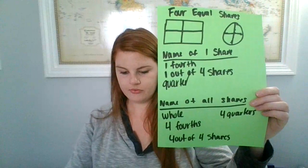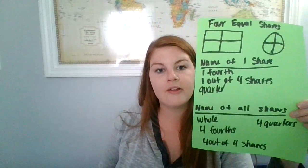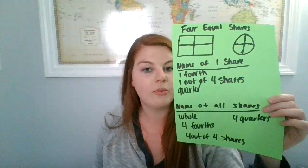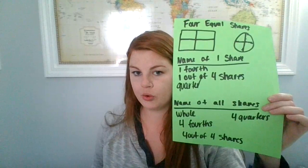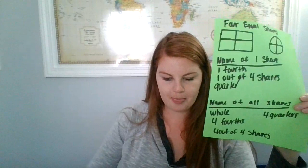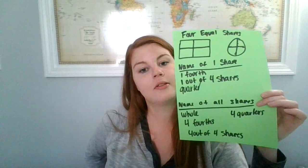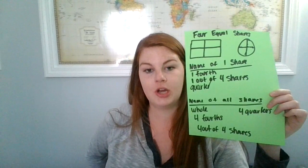So today we are just discussing that if you are trying to split something four ways — chopping it up and sharing it equally with your friends — it is called a fourth, one out of four shares, or a quarter. You can practice by drawing your own shapes and seeing if you could split them up and make them look equally split into four shares.